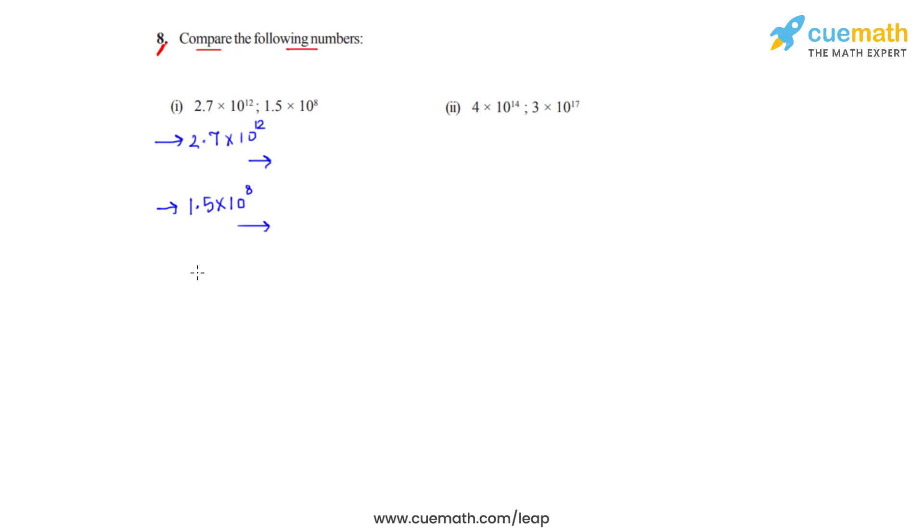From this we can clearly observe that 2.7 times 10 raised to 12 is greater than 1.5 times 10 raised to 8. One more conclusion we can draw from this is whenever two numbers are expressed in standard form, the number with a greater power of 10 will be greater than the other one.